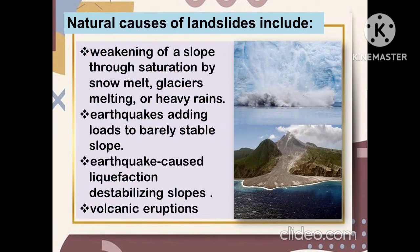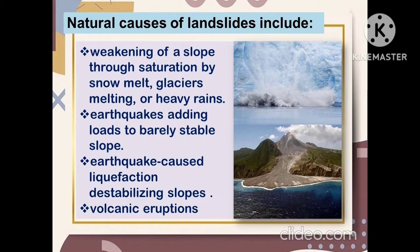Other causes of natural landslides include the following: weakening of a slope through saturation by snowmelt, glaciers melting, or heavy rains; earthquakes adding loads to barely stable slopes; earthquake-caused liquefaction destabilizing slopes; and volcanic eruptions.